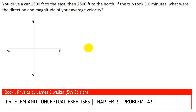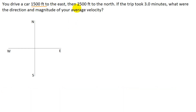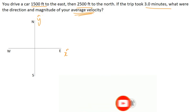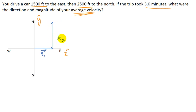In the next question, you drive a car 1500 feet to the East and then 2500 feet to the North. The total time for the trip is 3 minutes. We need to find the direction and magnitude of your average velocity. Taking x-cap as the unit vector along East and y-cap along North, vector R1 is 1500 feet East and vector R2 is 2500 feet North.